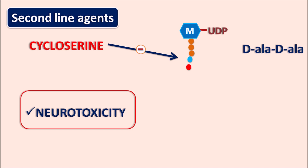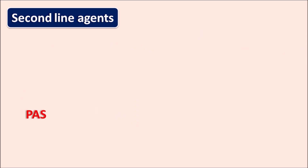Cycloserine has an important limitation: it can produce neurotoxicity. It produces peripheral neuropathy and paresthesias in patients, and at a toxic dose, cycloserine can also produce convulsions.